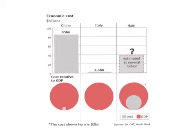The task for organisations is to help the people of Haiti recover from the crippling economic cost of the quake. China's earthquake cost an estimated $85 billion to repair, Italy's $2.5 billion, and Haiti's is estimated at several billion dollars. However, when viewed as proportional circles relative to each country's GDP, although China's is $85 billion it represents a relatively small share of their economy. In Italy it's smaller still. But for Haiti, the cost of repair represents roughly half of the country's entire gross domestic product.